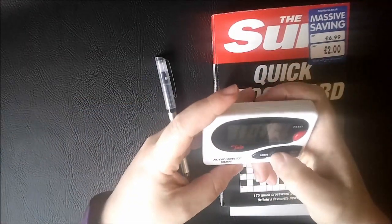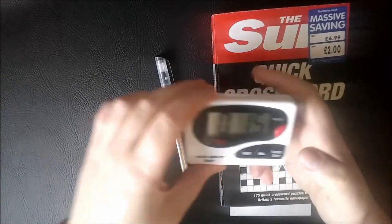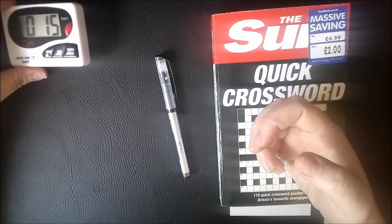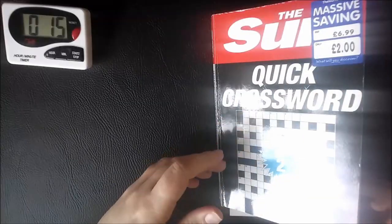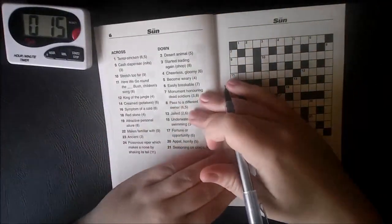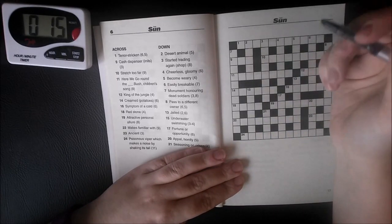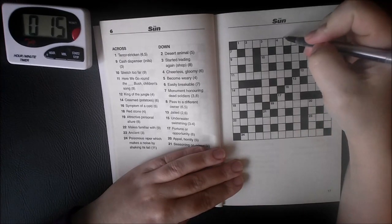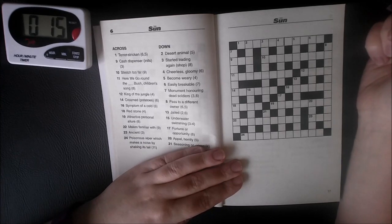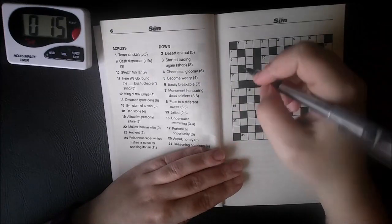Hey guys, same premise as last time. I've got 15 minutes to do as much of a crossword as I can, and anything I don't get done you guys have to help me with. Okay, let's see. So one across, six and five, terror-stricken - I literally have no idea so we'll move on. Cash dispenser initials, three letters: ATM.